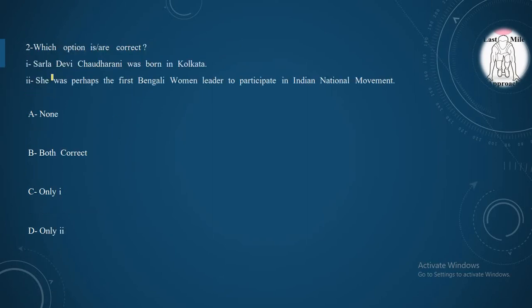Moving to our second question, which option is correct? First, Salah Devi Choudrani was born in Kolkata. Second, she was perhaps the first Bengali woman leader to participate in Indian National Movement. Both first and second statement is correct. So, Option B, both statements are correct.